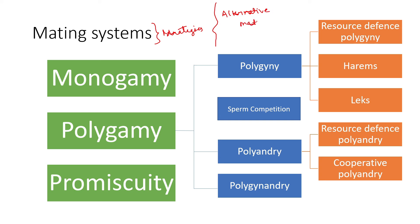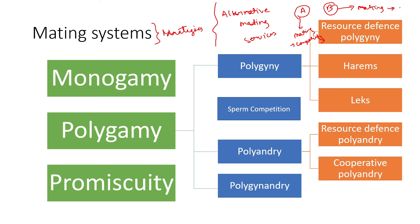Alternative mating strategies refer to the fact that some organisms — basically some males — have the ability to produce different morphs. In a particular species there might be morph A and morph B, each with a different mating ability. For example, morph A might go for direct competition — morph A individuals are more aggressive and compete — while morph B might be more cooperative. Multiple alternative strategies can exist, and there can be exchange between them.